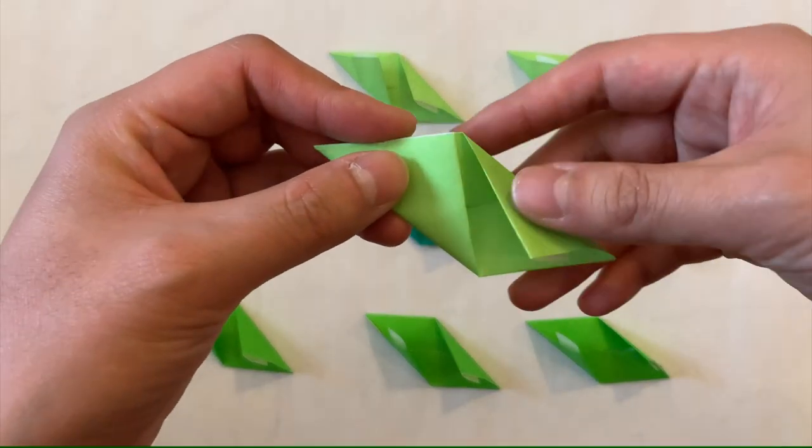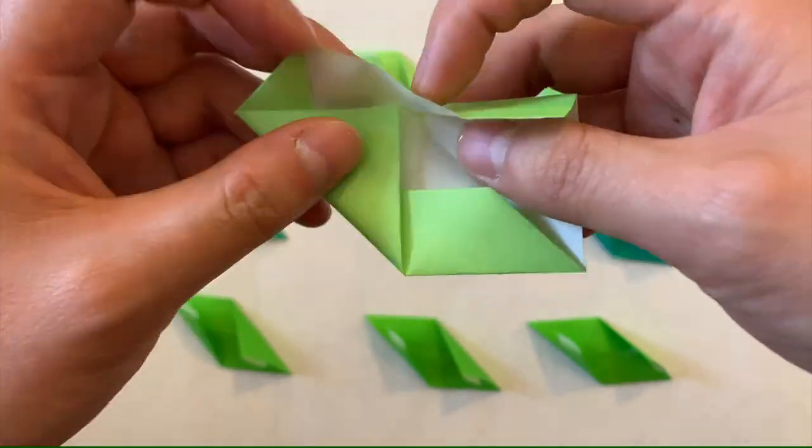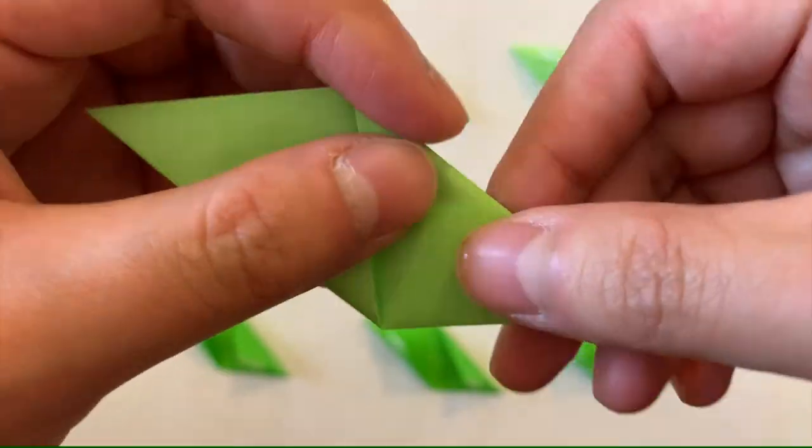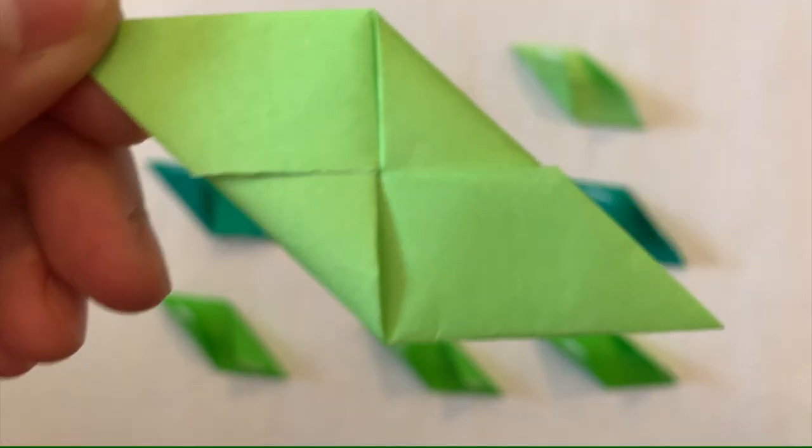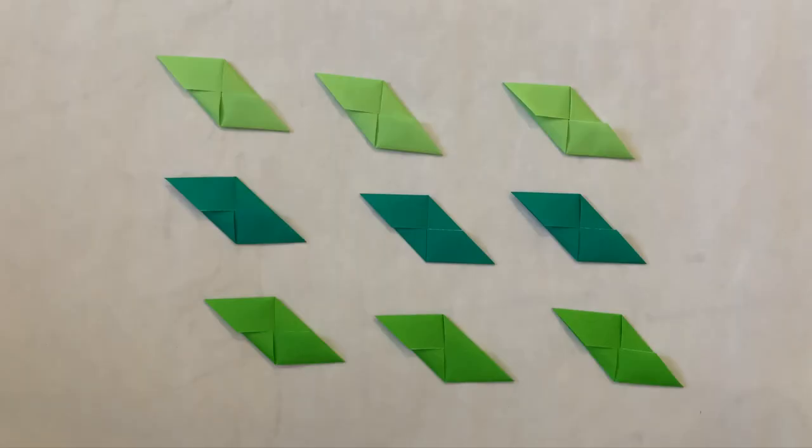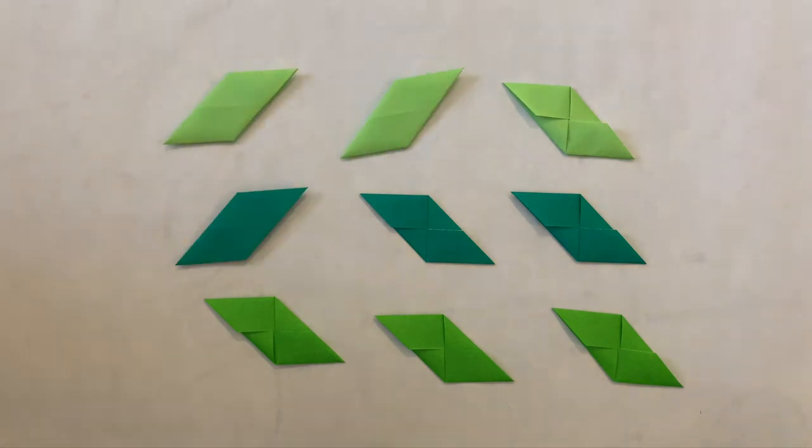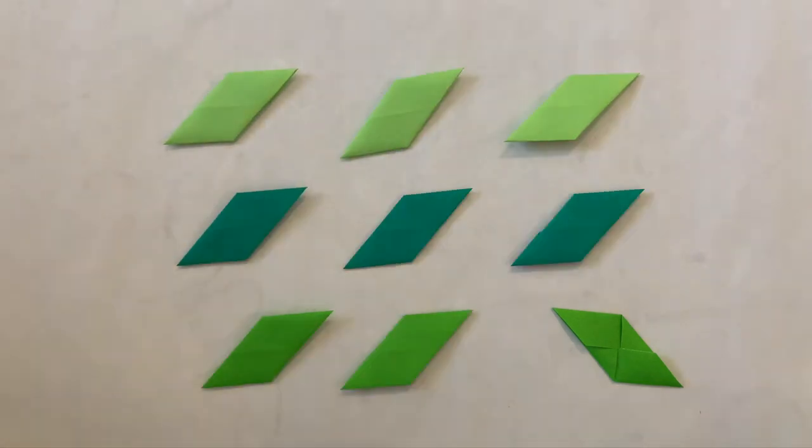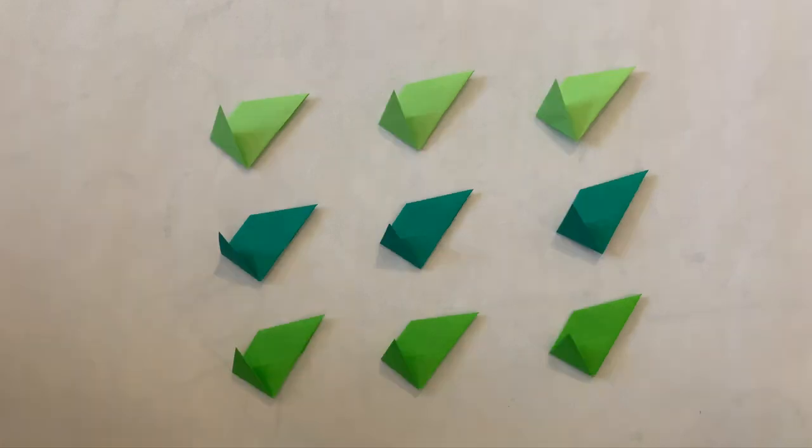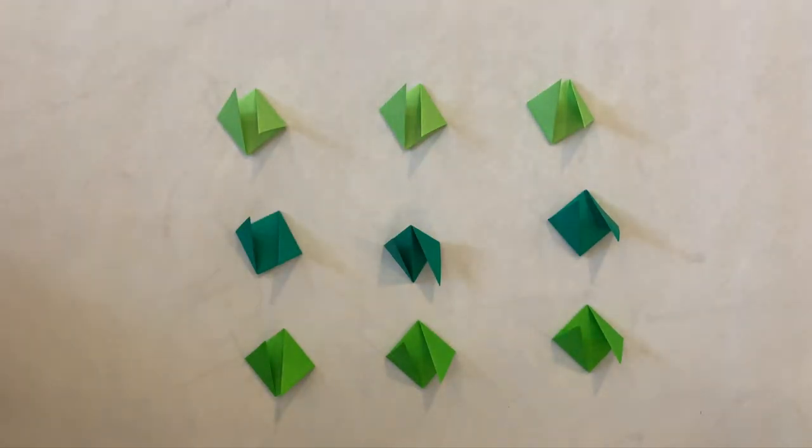Now comes the hard part. Tuck these corners into the flaps, like this. Now for an even harder folding maneuver: turn everything over. And finally, fold the corners in, and mountain fold the entire thing in half.